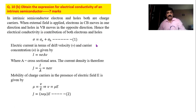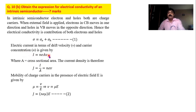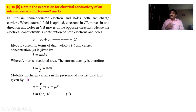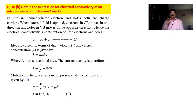Sigma is equal to sigma-e plus sigma-h. We start with the current equation: I equals nqAv. Dividing by area, current density J equals nev. Next, define mobility: mobility mu is the drift velocity acquired by an electron or hole in a given electric field, given by mu equals v divided by E, where v is velocity and E is the applied electric field. So v equals mu times E.